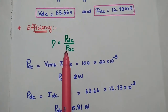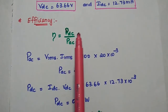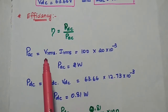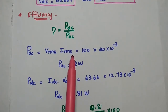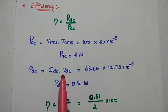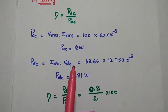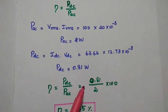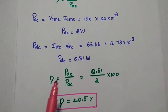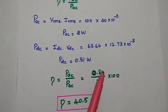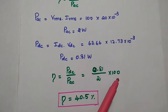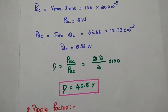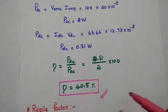For efficiency: AC input power = Vrms × Irms = 100 × 20 × 10⁻³ = 2 W, and DC output power = Vdc × Idc = 63.66 × 12.73 × 10⁻³ = 0.81 W. Efficiency = (0.81 / 2) × 100 = 40.5%.